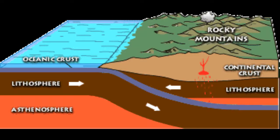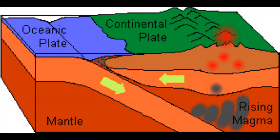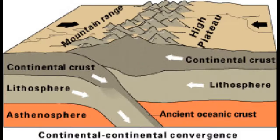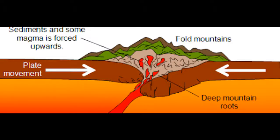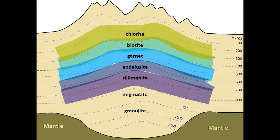Fold mountains: associated with thrusting and folding. Examples are the Balkan Mountains, the Jura, and the Zagros. When plates collide or undergo subduction and ride over one another, the plates tend to buckle and fold, forming mountains. Most of the major continental mountain ranges are fold mountains.